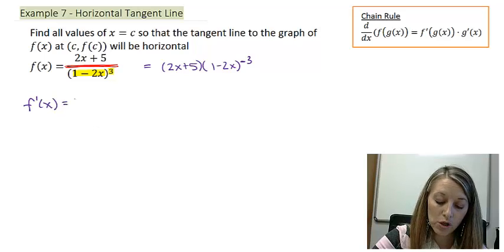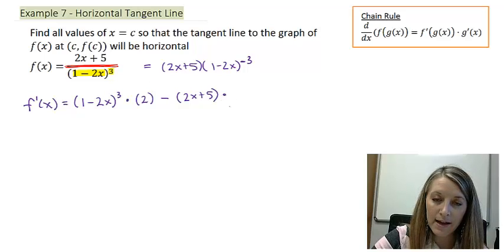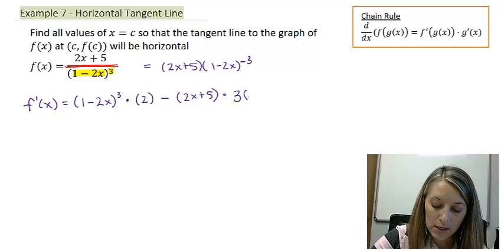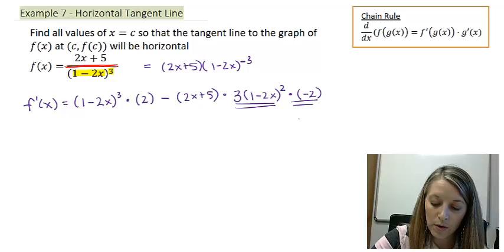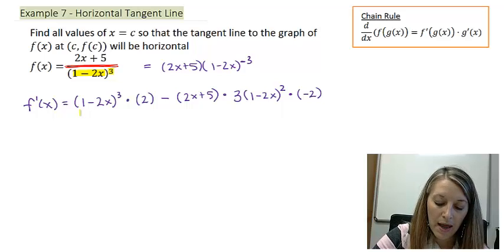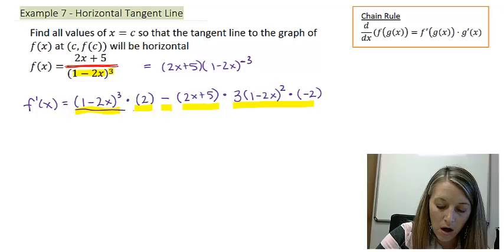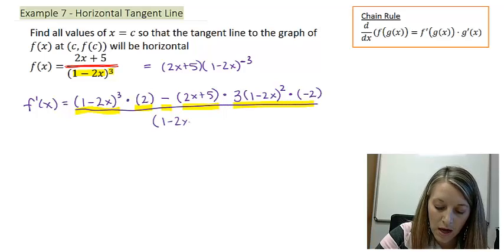So my quotient rule is the original of the bottom times the derivative of the top, which gives me 2, minus the original of the top times the derivative of the bottom. And that's why I need to do my chain rule. So 3 times (1 - 2x) to the second power times the derivative of the inside, which is negative 2. So here's the derivative of the outside times the derivative of the inside. And that finishes up the top of my quotient rule, where I had low d high minus high d low. And that is all over my original of the denominator squared.